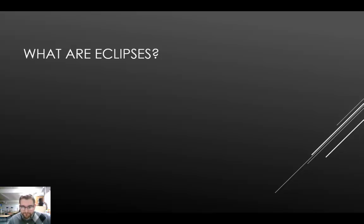What are eclipses? The moon's orbit around Earth is slightly tilted with respect to Earth's orbit around the sun. As a result, the moon travels above and below Earth's orbit. But on rare occasions, Earth, the moon, and the sun line up. When an object in space comes between the sun and a third object, it casts a shadow on that object, causing an eclipse. There are two types of eclipses that we see here on Earth: a solar eclipse and a lunar eclipse.